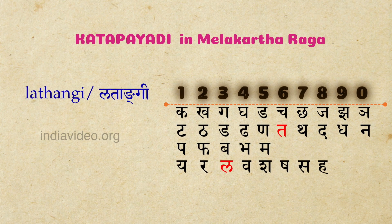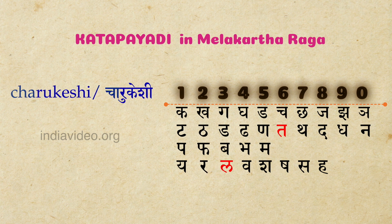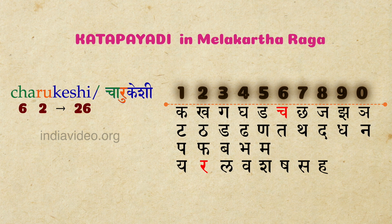The first two syllables of the raga Lathangi — La and Tha — represent the number 63, which is the position of this raga in the Melakarta sequence. Similarly, the first two syllables of the raga Charukeshi is Kattapayadi for the number 26, which is the raga's position in the Melakarta sequence.